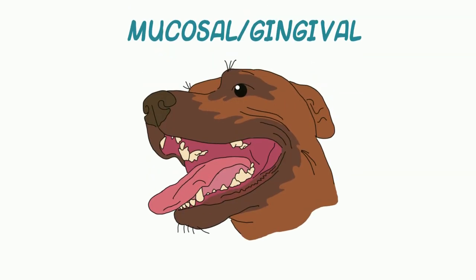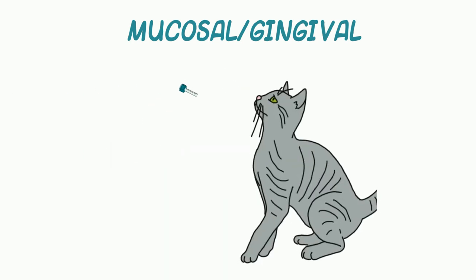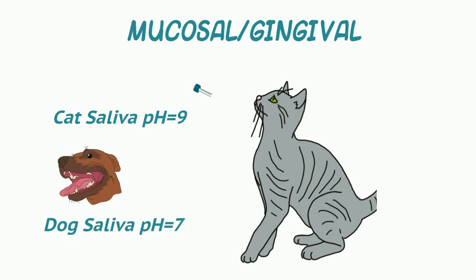Mucosal epithelium has no stratum corneum, so drugs pass more easily than through the skin. When a drug is placed on the gingiva or buccal mucosa of the mouth, the absorbed drug is not subject to first-pass hepatic metabolism — which comes in handy when delivering an anesthetic or tranquilizer to a cat by squirting it in its hissing mouth. The pH of saliva in a species is a key factor impacting whether a drug is uncharged and absorbable, or charged and unabsorbable. For example, buprenorphine — a weak base — tends to be absorbed gingivally in cats with high pH saliva, but not in dogs with lower pH saliva.